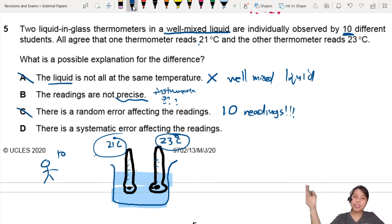D: There is a systematic error affecting the readings. I think this is probably true because if you have 10 readings of 21, 10 readings of 23, and they all agree, it's probably a systematic error in one of the thermometers or both. So this is probably the best choice.